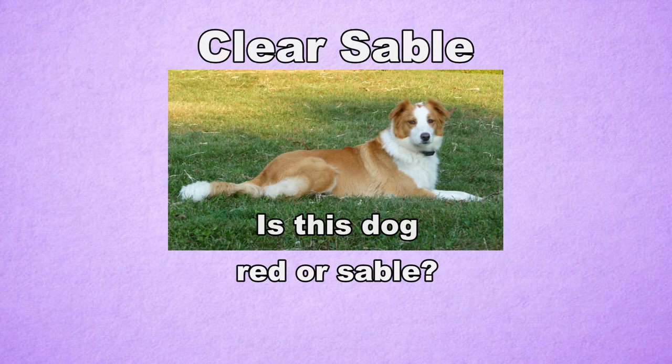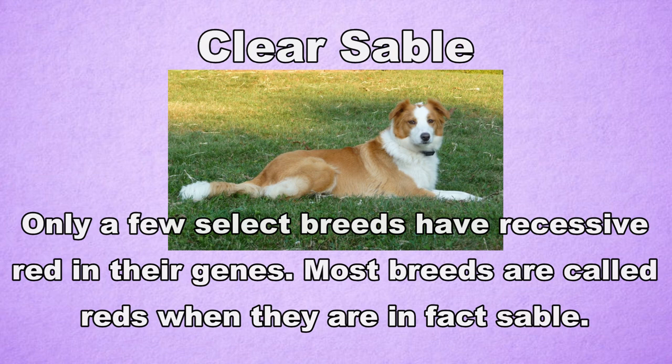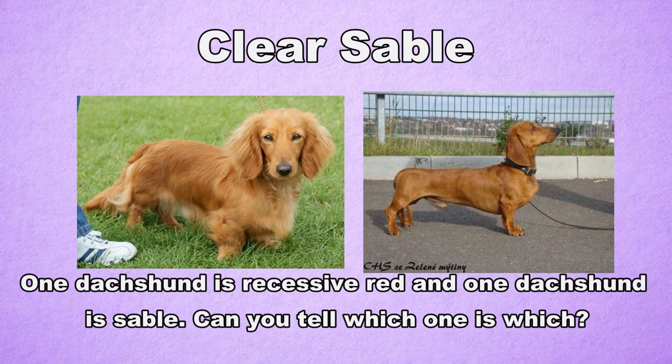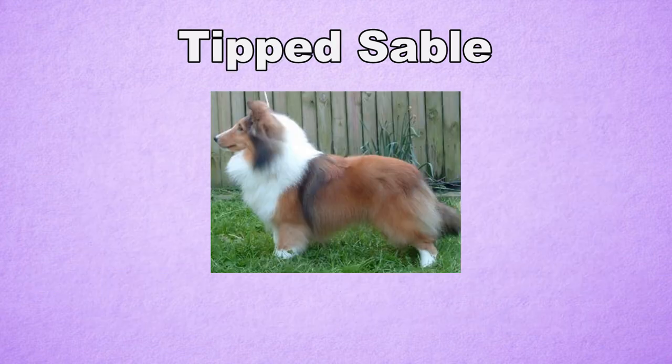Clear sables are completely red dogs with just a few eumelanin hairs — they can be almost impossible to distinguish from recessive red. If there is any black, liver, blue, or Isabella in the coat at all, the dog must be a sable rather than a recessive red. Tipped sables are red dogs with eumelanin hairs usually on the back, head, ears, and tail.